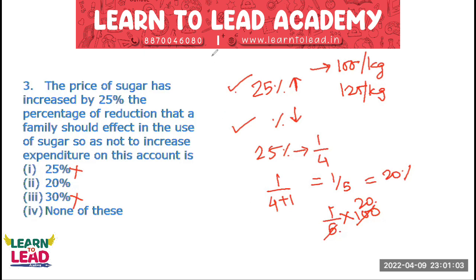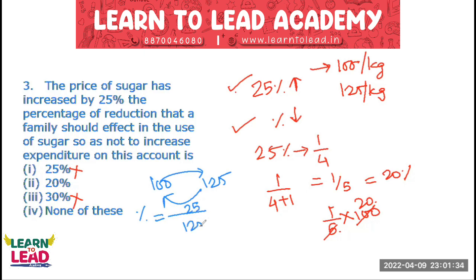Using the equation: price 100, 25% increase. The basic concept of percentage is what we compare and to whom we compare. So the consumption decrease is 1 by 5, which is 20%. This basic concept is very very important.